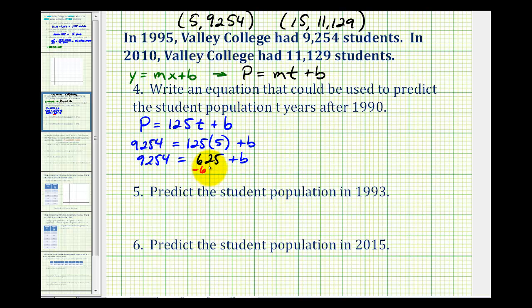We'll subtract 625 on both sides, and this will give us the value of b. This would be zero, so we'll have b equals, this difference would be 8,629.